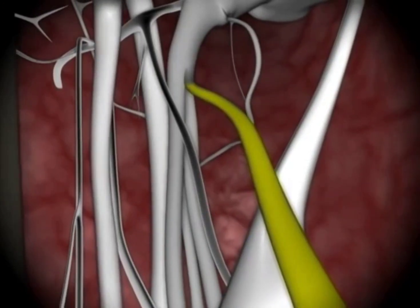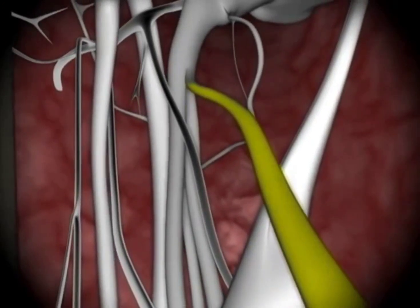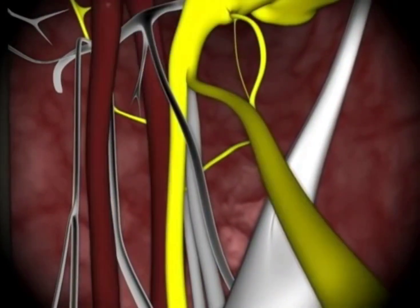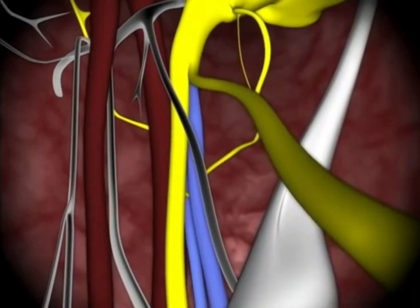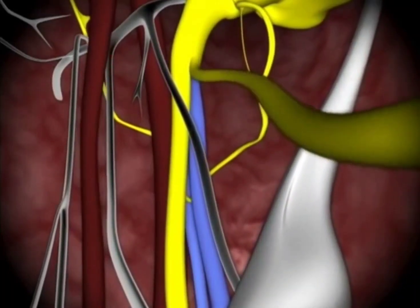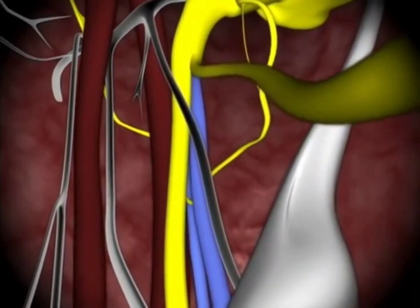We're just about there. Notice that we are approaching just above the lingual, and the inferior alveolar neurovascular bundle can be visualized.